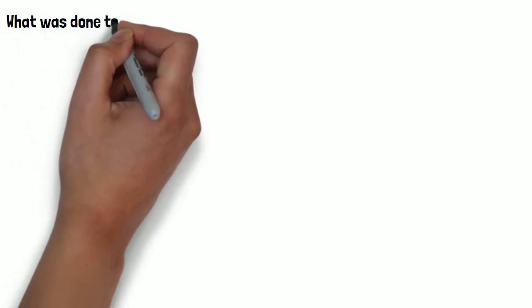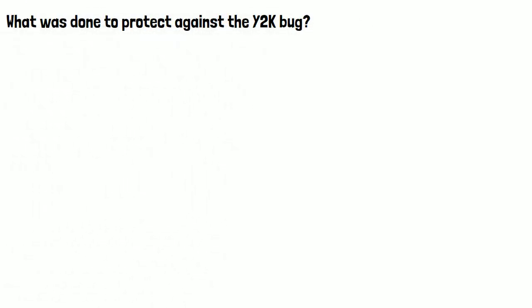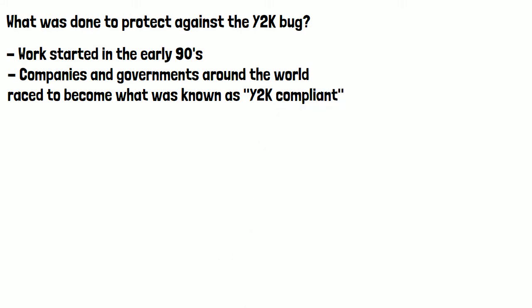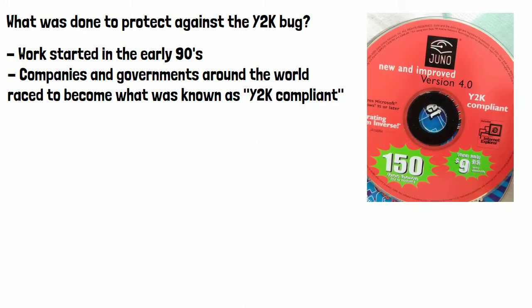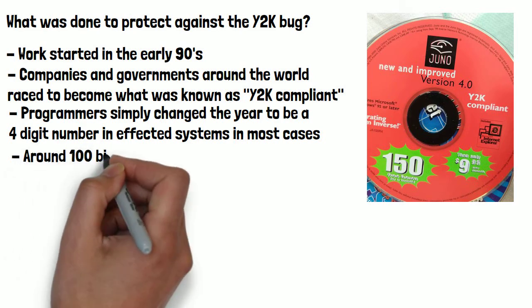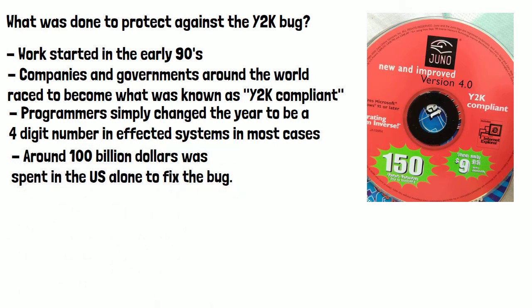So what was done to protect against the Y2K bug? Work started in the early 90s to correct vulnerabilities. Companies and governments around the world raced to become what was known as Y2K compliant. Programmers simply changed the date to be a four-digit number in affected systems in most cases. The sheer amount of systems and programs that needed altering led to the project taking so long and being so expensive. It's estimated that around 100 billion dollars was spent in the US alone to fix the bug.